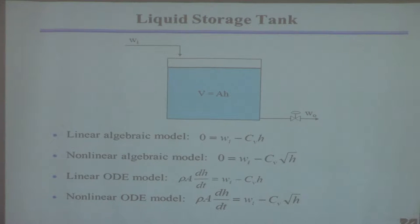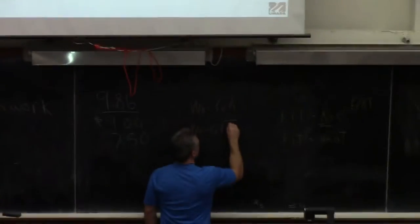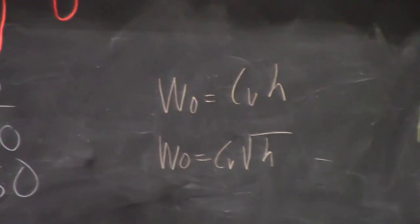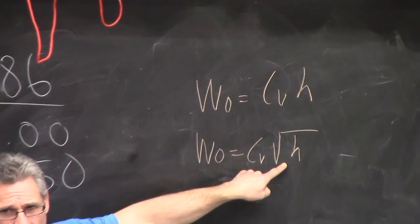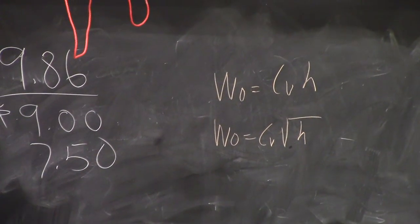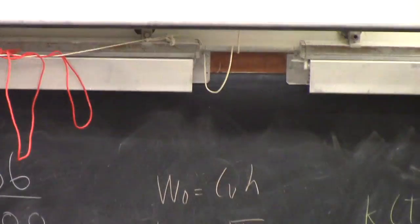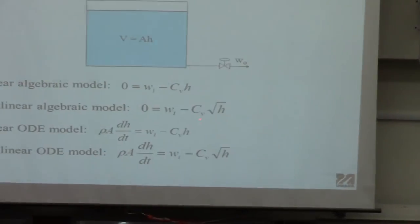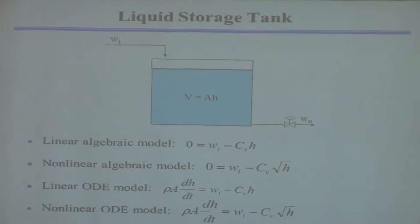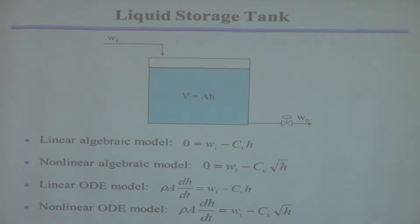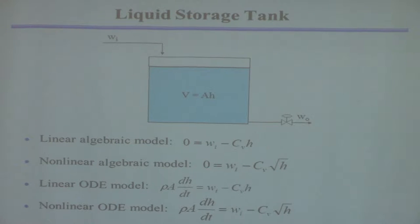A more reasonable model for the outlet flow is that it depends on the square root of the level rather than the level itself. If you substitute that in, you get an equation that is also easy to solve in this case, but this equation is not linear — because the square root of H is a nonlinear function of H. So this is a nonlinear algebraic equation. This one happens to be easy to solve, but generally nonlinear equations won't be.